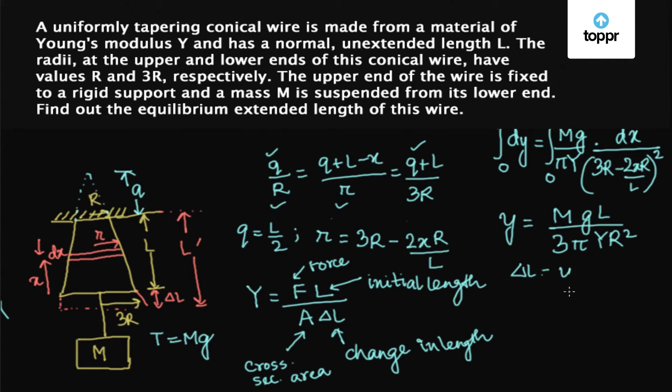That is, delta L equals Y equals MG upon 3π Y into R square. So the new extended length at equilibrium equals L plus delta L which is equal to L into 1 plus MG upon 3π Y R square.